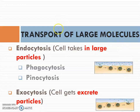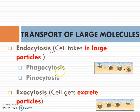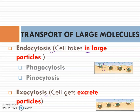Basically, large molecule transportation can be divided into two types: endocytosis and exocytosis. For endocytosis, we can see it as the cell taking in large particles. There are two types under endocytosis, which are phagocytosis and pinocytosis.